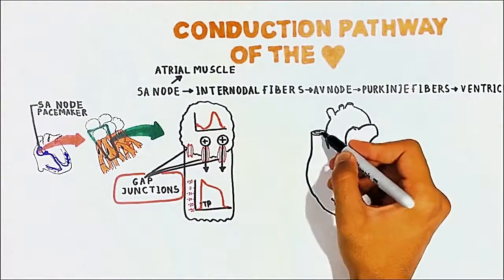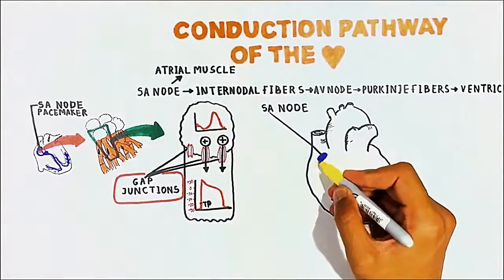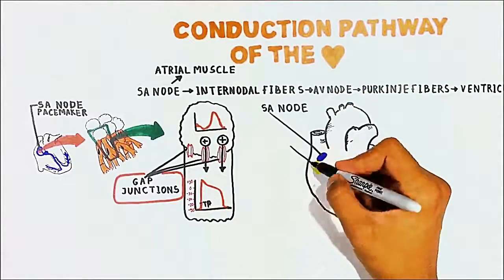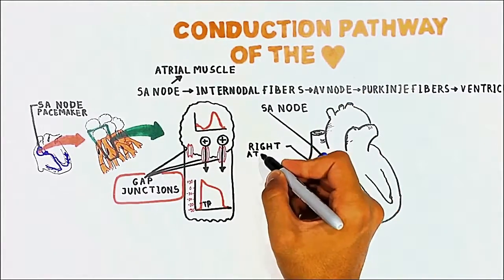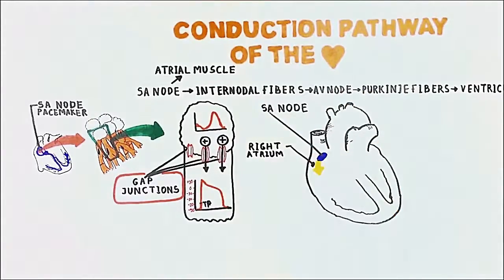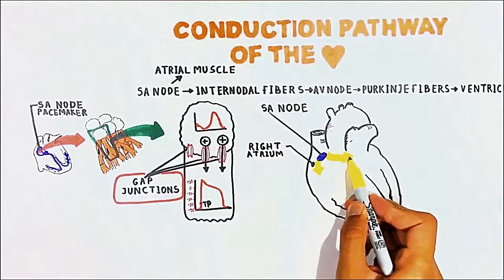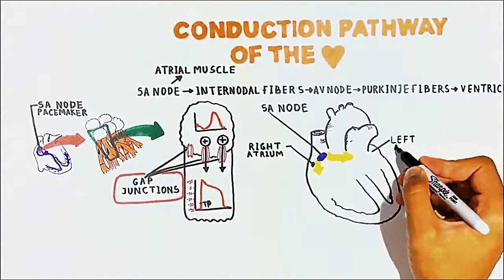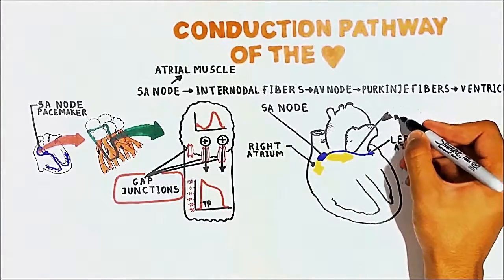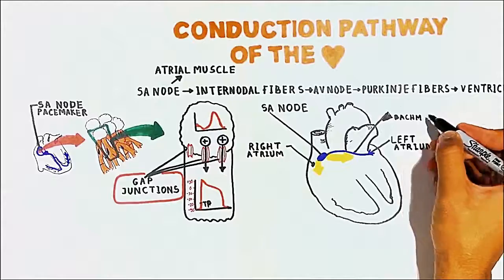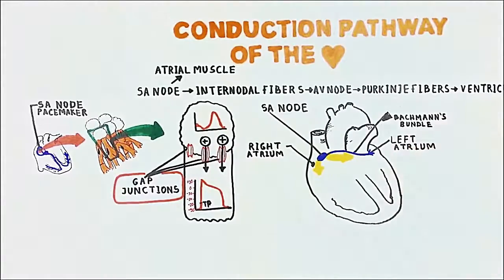When the SA node spontaneously generates an action potential, it first spreads to the right atrium and to the left atrium through Bachmann's bundle, stimulating the myocardium of the atria to contract.